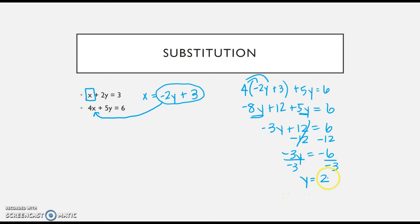Once I know y is 2, I can plug it back into the equation for x. So I've got negative 2 times 2 plus 3, that's negative 4 plus 3, which is negative 1. So my answer is negative 1, 2, which is what we found when we graphed.